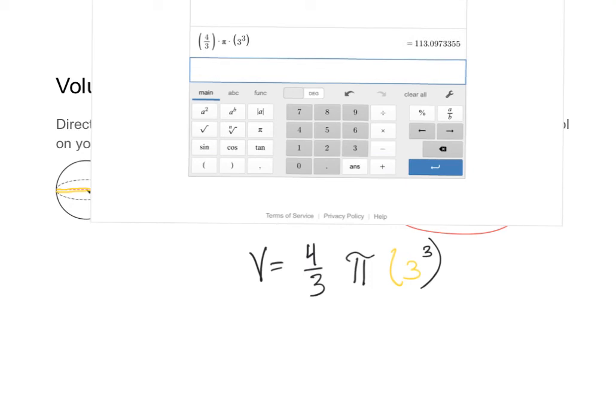My answer is going to be 113.097 dot dot dot. Now remember we want to round to the nearest hundredths. So we want to round to that second number after the decimal point, but we need to look at that third number to decide whether to round up or stay the same. Because that third number is larger than five, I need to round up. Now if I round nine up by one, that actually becomes 10. So volume is going to equal 113.10.